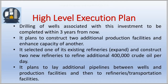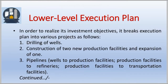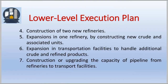The lower-level execution plan breaks down into various projects as follows: one — drilling of wells; two — construction of two new production facilities and expansion of one; three — pipelines from wells to production facilities, production facilities to refineries, and production facilities to transportation facilities; four — construction of two new refineries; five — expansion in one refinery by constructing new crude and associated units; six — expansion in transportation facilities to handle additional crude and refined products; seven — construction or upgrading of the pipeline capacity from refineries to transportation facilities.